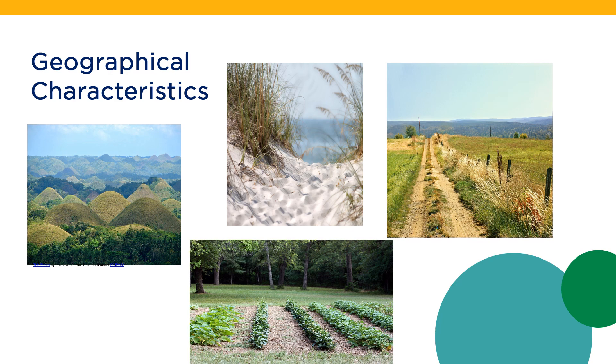Geographical characteristics of a community include landforms, types of soil, vegetation, and animal life.